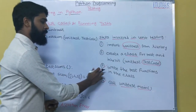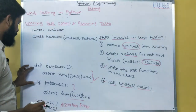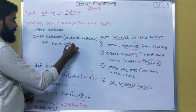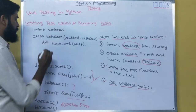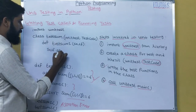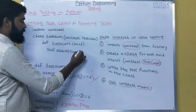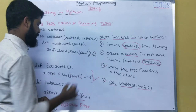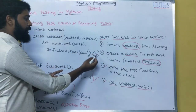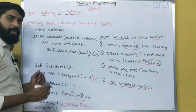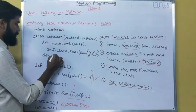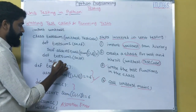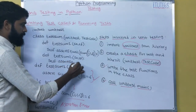The third step is to write the test functions in the class. So the two functions we are going to define are: first, def test_sum1(self), and inside it we write self.assertEqual(sum([1, 2, 3]), 6). That means the sum becomes 6 and the assertion will be true. The second function is def test_sum2(self), and inside it we write self.assertEqual(sum([1, 2, 2]), 6).